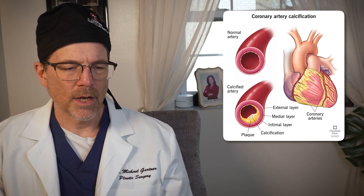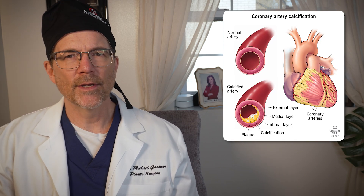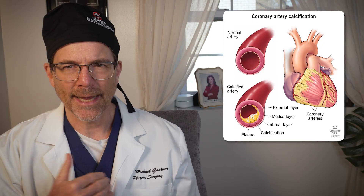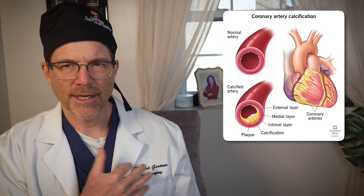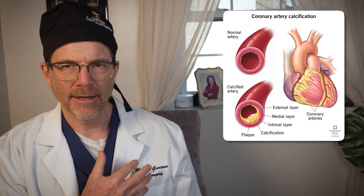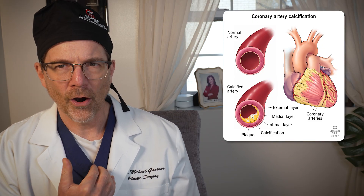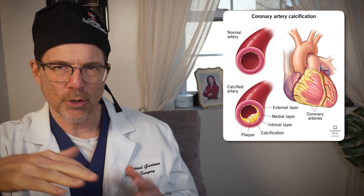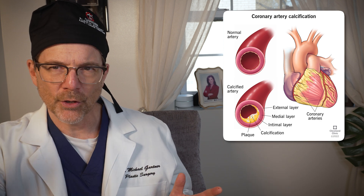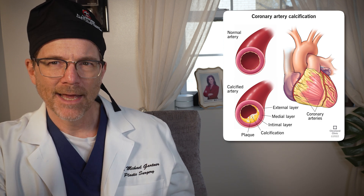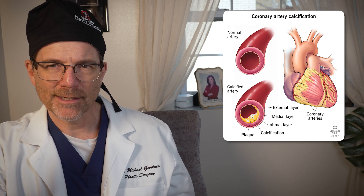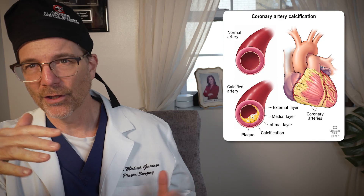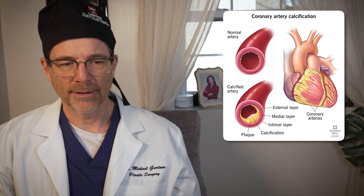These plaques usually have a lot of calcium in them. Sometimes you can get a test — a high-speed CAT scan — which takes fine cuts of the heart, and they can do what's called a calcium score. They rate you on a scale of one to one hundred to see how much calcium is in your coronary arteries. A high number is not good; a low number is better.